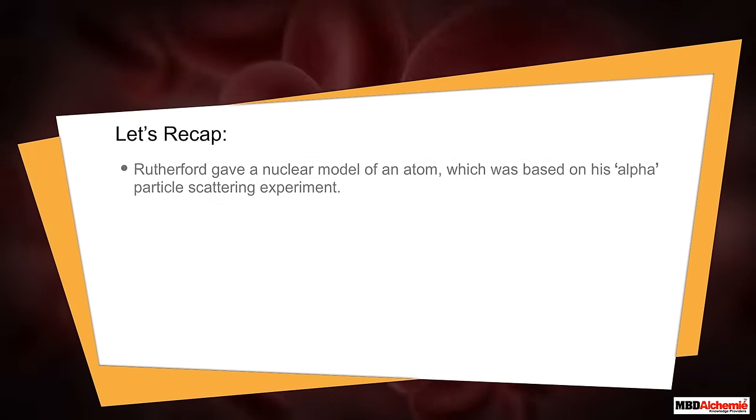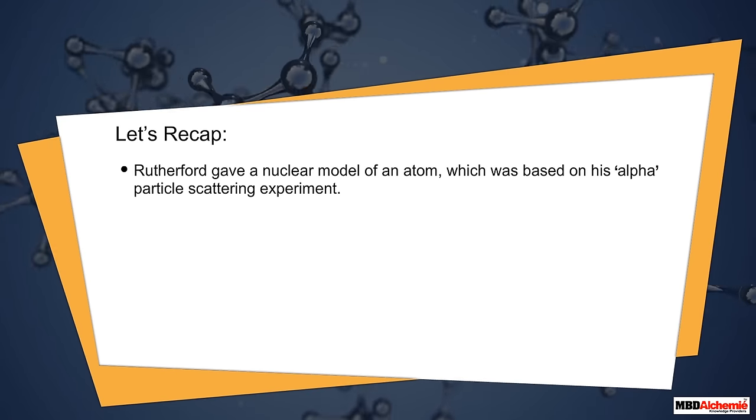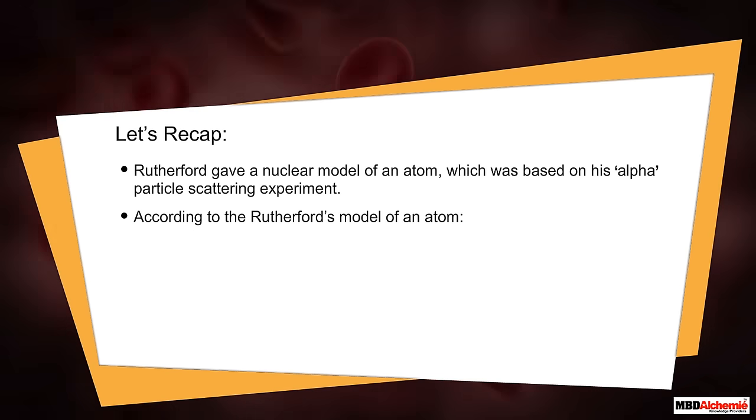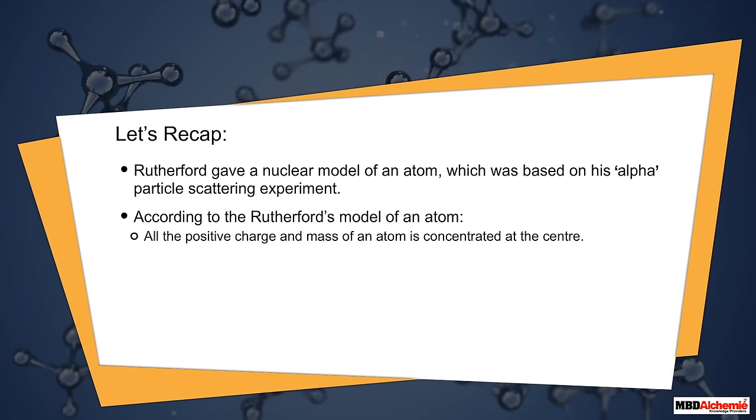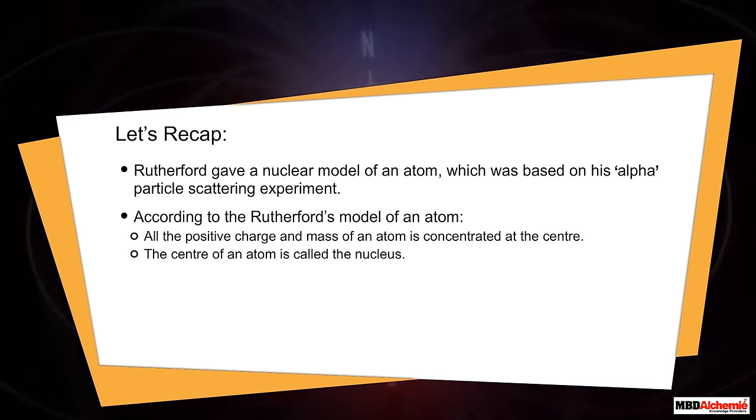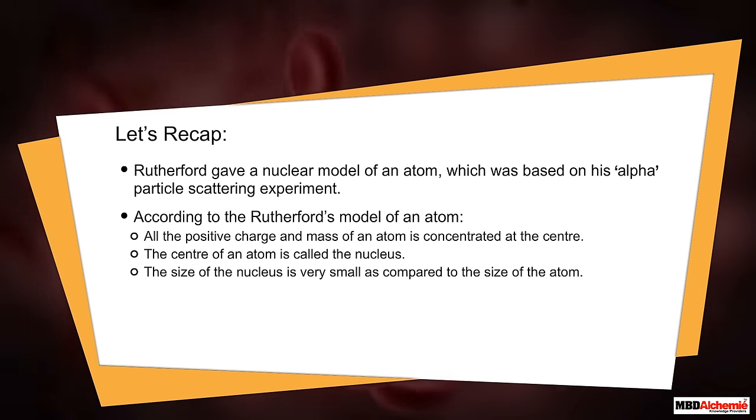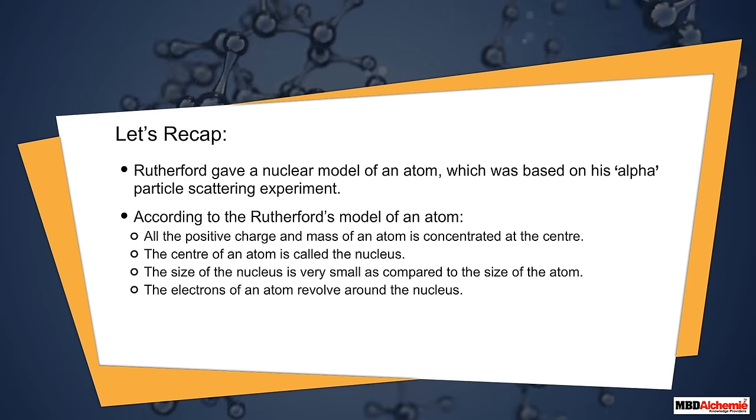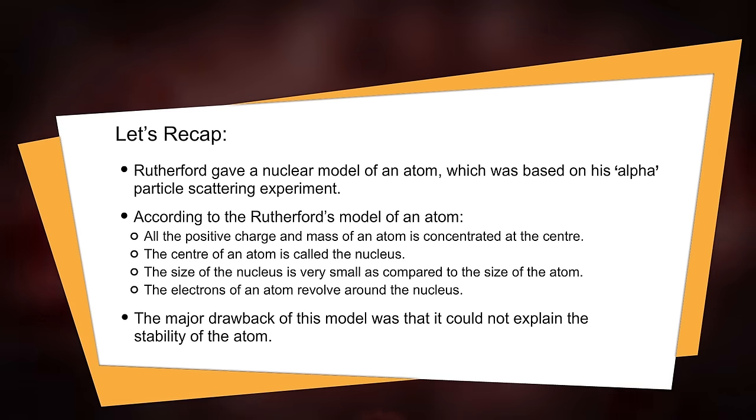Let's recap. Rutherford gave a nuclear model of an atom which was based on his alpha particle scattering experiment. According to Rutherford's model of an atom, all the positive charge and mass of an atom is concentrated at the center. The center of an atom is called the nucleus. The size of the nucleus is very small as compared to the size of the atom. The electrons of an atom revolve around the nucleus. The major drawback of this model was that it could not explain the stability of the atom.